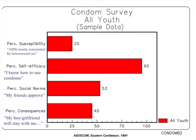Here's the reason it's important to compare doers and non-doers when looking at determinants of behavior. This is from a condom survey done by AED in the Eastern Caribbean in 1991. From KPC data, 25% said AIDS is mostly transmitted by heterosexual sex, suggesting a problem with perceived susceptibility. 95% said they knew how to use condoms, so perceived self-efficacy didn't seem to be a problem. 53% said their friends approve. 45% said their boyfriend or girlfriend would stay with them. Looking at this, you might say the real problem to work on is perceived susceptibility — it's the lowest one.